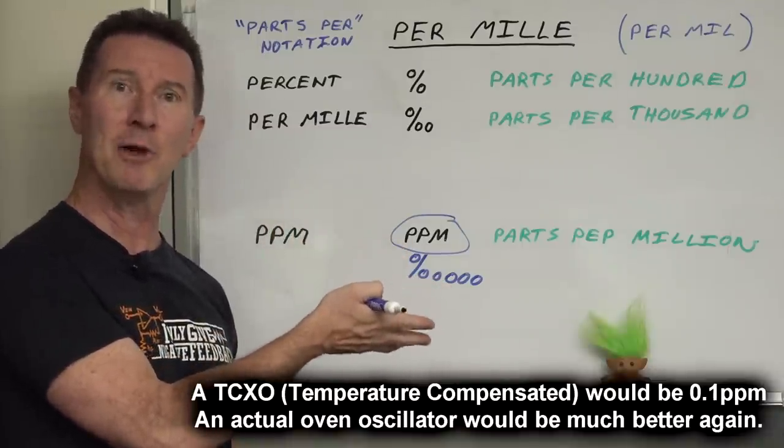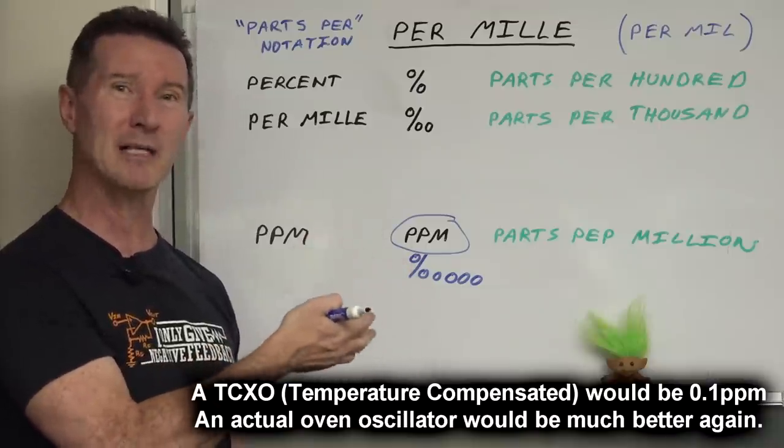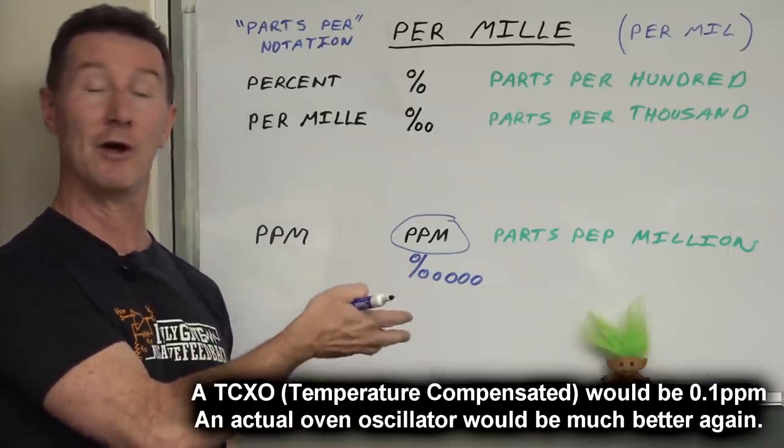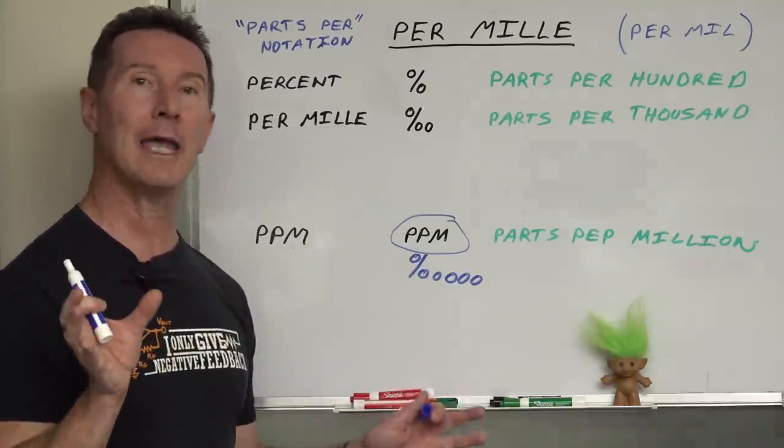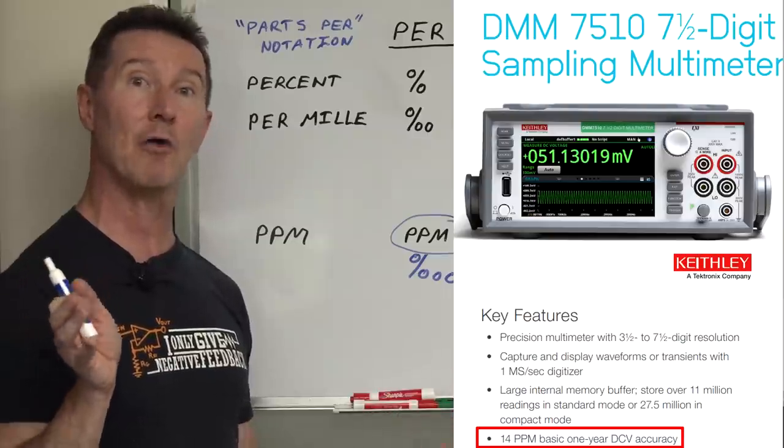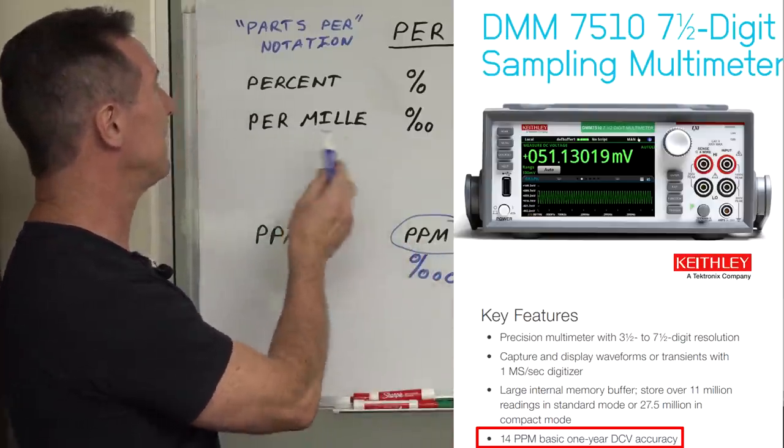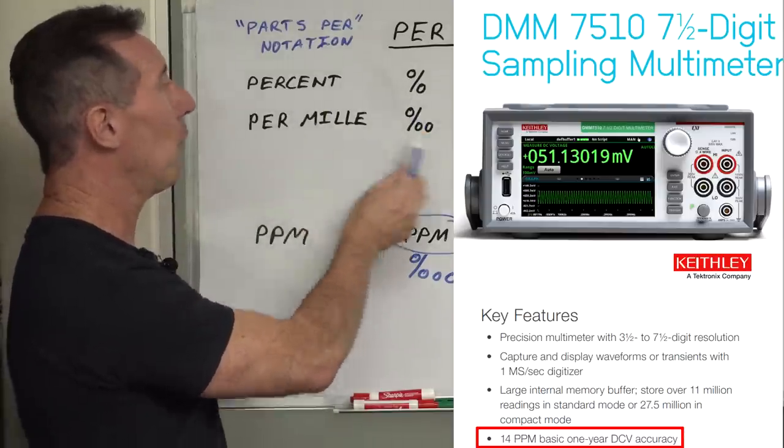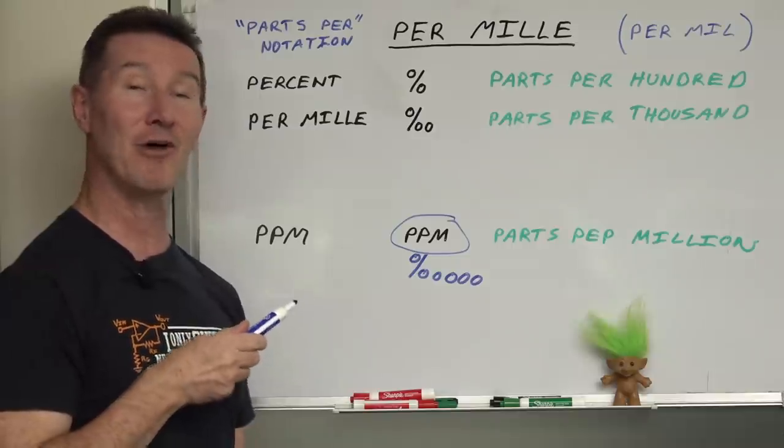And you'll get that in data sheets for crystal oscillators, for example. The accuracy of crystal oscillators generally defined in parts per million. You know, a couple of parts per million for a regular crystal down to like 0.1 parts per million for a more stable like ovenized oscillator or something like that or even lower. And you'll get that in your high end like six, seven and a half digit or eight and a half digit multimeters. They'll typically specify the accuracy in parts per million instead of percent or per mil in this weird ass case of this power supply that we looked at today.